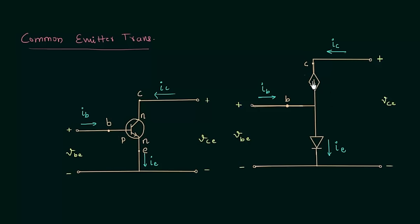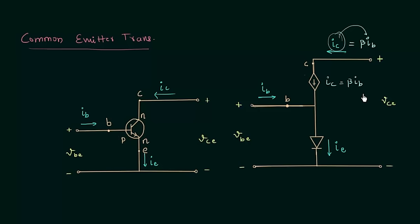We have a dependent current source because the collector current IC equals beta times the base current IB — the collector current depends on the base current. So we use a dependent current source symbol with IC = β·IB, and here we are neglecting the reverse saturation current.